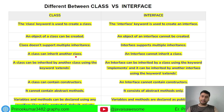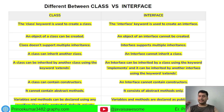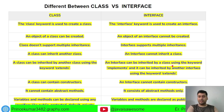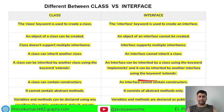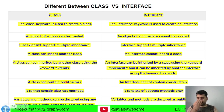A class does not support multiple inheritance, but an interface supports multiple inheritance. A class can inherit another class; an interface cannot inherit a class — an interface can only inherit another interface. A class can be inherited by another class using the extends keyword, while an interface can be inherited by another interface using extends, and implemented by a class using the implements keyword.